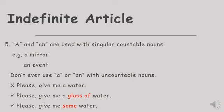The other thing that we have to remember is that a and an are used with singular countable nouns. Kata sandang a dan an itu digunakan dengan kata benda yang bisa dihitung dan jumlahnya tunggal. See the example: a mirror, an event.